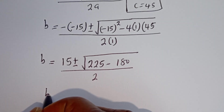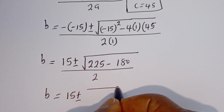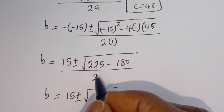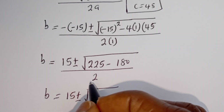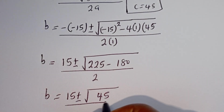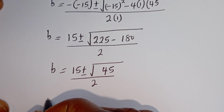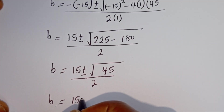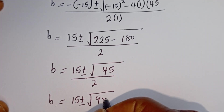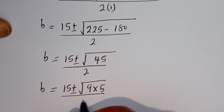And here we have B is equal to 15 plus or minus square root of 225 minus 180, that is 45, over 2. The square root of 45 can be written as square root of 9 multiplied by 5, over 2.